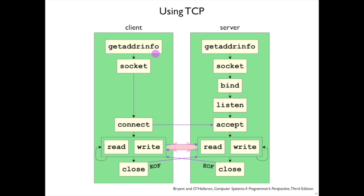On the client side, the client uses getaddrinfo with the server's address instead of its own address to get the server's address, uses that to create a socket, and then uses the address to connect to. Connect on the client is going to send some packets to trigger a new connection on the server side. The server side will get a new file descriptor — the connected socket — and so there we have the stream-like communication channel between the two processes.